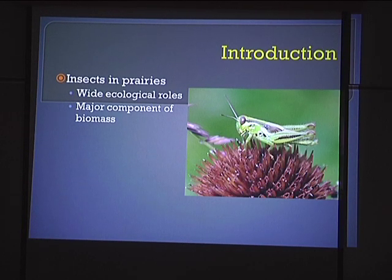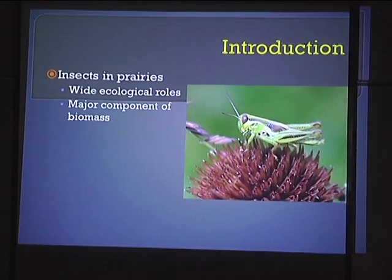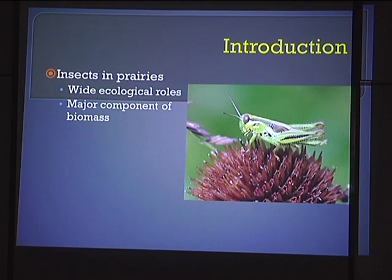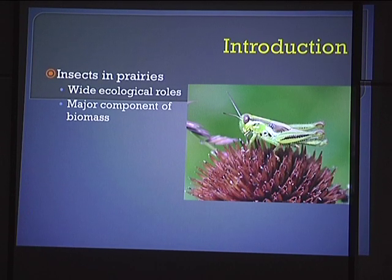They're also a huge component of the biomass of the tall grass prairie. I read in Samson and Knopf's book called Prairie Conservation that insects actually represent more of the biomass in the tall grass prairie than do any of the charismatic megafauna or the vegetation of the tall grass prairie. So if you kind of let that sink in, that really tells you how many of them are there and how many of them we're not even seeing.